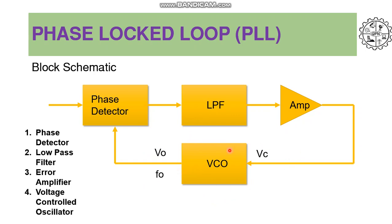When some control voltage VC is applied to the VCO, the free running frequency will be shifted either to the positive side or to the negative side, and there will be a change in the free running frequency. That's why this is known as voltage controlled oscillator — its oscillation depends on the control voltage applied. Depending on the magnitude and polarity, there will be a shift in the free running frequency.